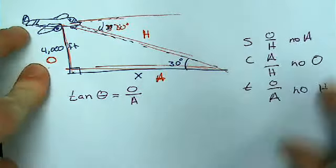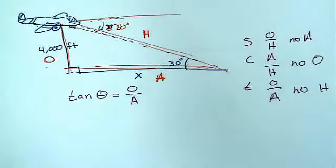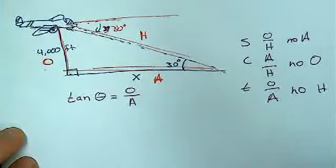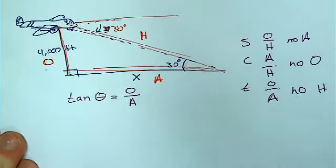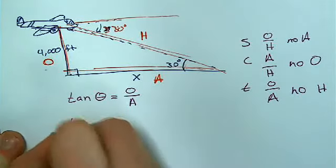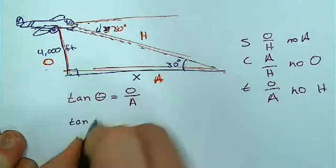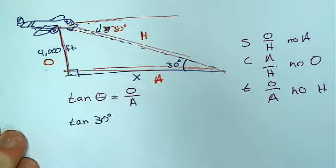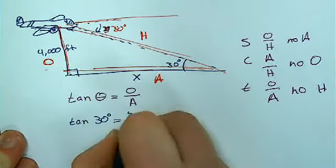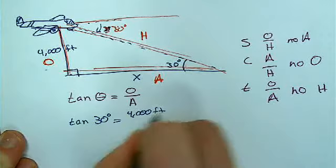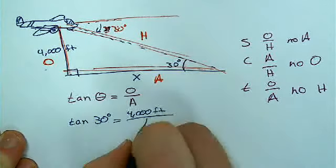And again, it goes back to whatever mnemonic, or trick, or memory aid you want to use to get those guys memorized. That's the challenge. So I write down my trig function. Now let's plug in my notes. I know that the angle of consideration, my theta, is 30 degrees. The opposite is 4,000 feet. And the adjacent is X.